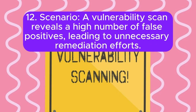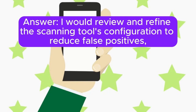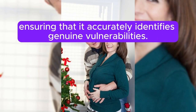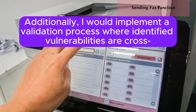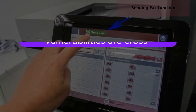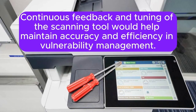Scenario 12: A vulnerability scan reveals a high number of false positives, leading to unnecessary remediation efforts. How do you address this issue? I would review and refine the scanning tool's configuration to reduce false positives, ensuring that it accurately identifies genuine vulnerabilities. This might involve updating signatures, adjusting sensitivity settings, or incorporating context-aware scanning techniques. Additionally, I would implement a validation process where identified vulnerabilities are cross-checked against multiple sources or manually verified before remediation efforts are initiated. Continuous feedback and tuning of the scanning tool would help maintain accuracy and efficiency in vulnerability management.